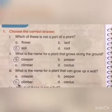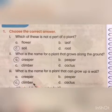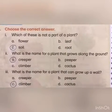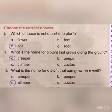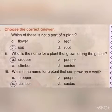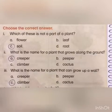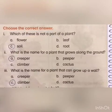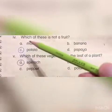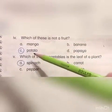Number three: what is the name for a plant that can grow up a wall? A) creeper, B) peeper, C) climber, D) cactus. The correct answer is C) climber. A plant that grows along the ground is called a creeper — an example is watermelon, which grows along the ground. A plant that can grow up a wall is called a climber — an example is grapes, which grow along the wall.